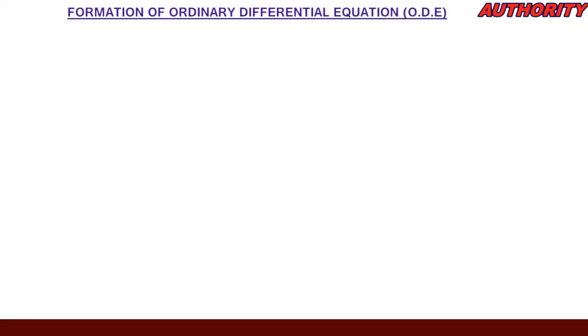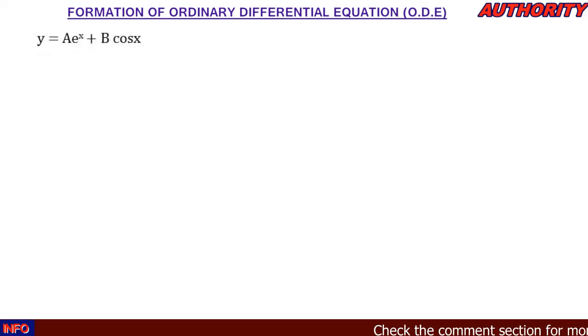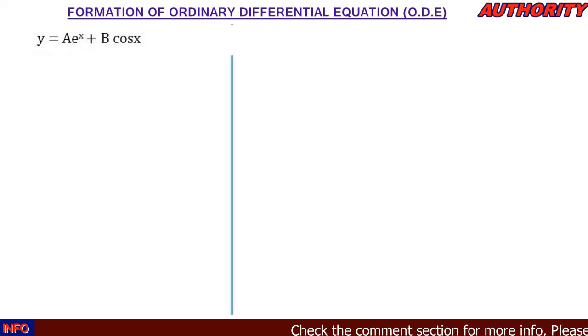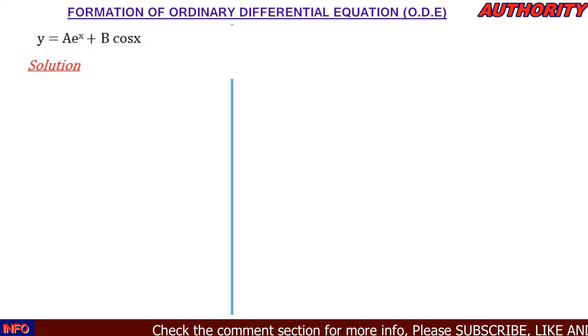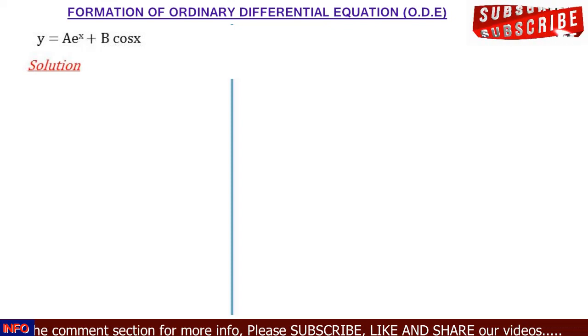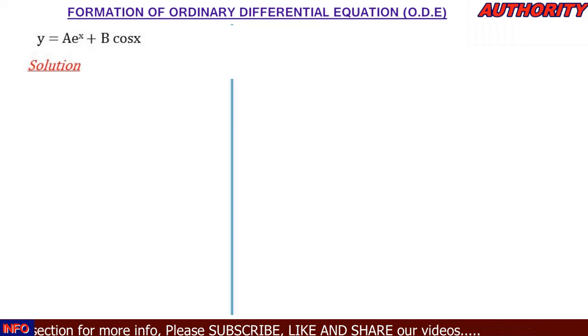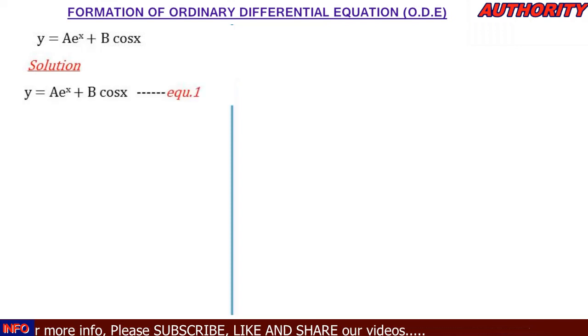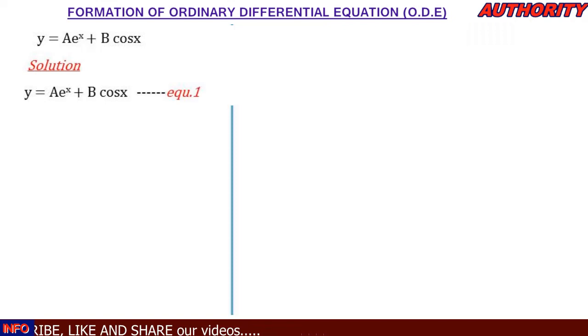Alright, welcome again. Let's take a look at this question — we are to form a differential equation corresponding to the function y = ae^x + b·cos(x). We have been talking about formation of ordinary differential equations, so let's take a look at this and work through it. We have y = ae^x + b·cos(x); let's call this equation 1.